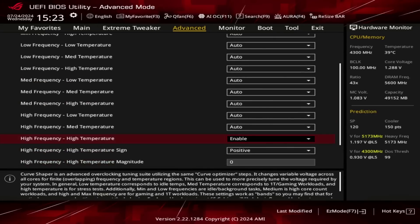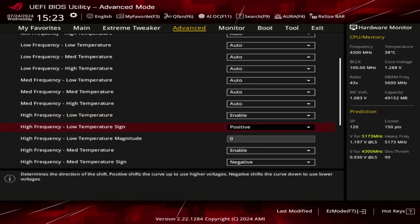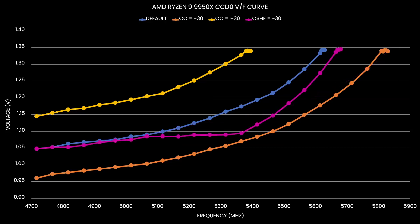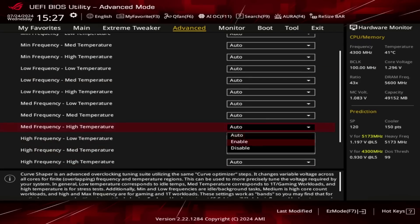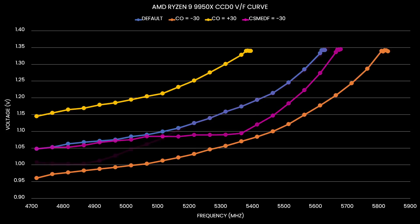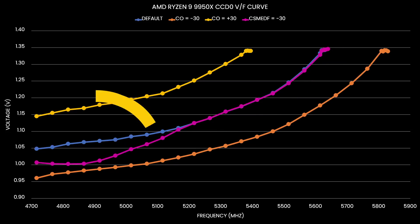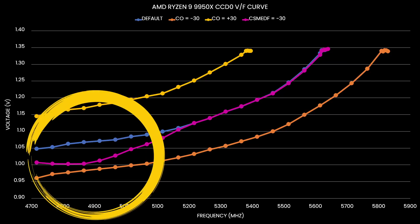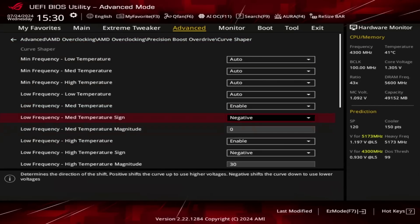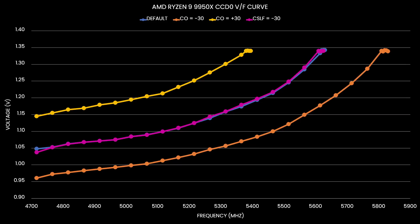Now let's set a minus 30 Curve Shaper for all temperature points at high frequency. The voltage-frequency curve is again adjusted, but this time the adjustment happens much earlier. In fact, the upper end of the VF curve trends back to our default VF curve. Let's continue and set minus 30 at medium frequency — the adjustment now happens very early, with the peak offset appearing around 4.8 GHz. Lastly, with the low-frequency points at minus 30, the voltage-frequency curve is unaffected above 4.7 GHz.